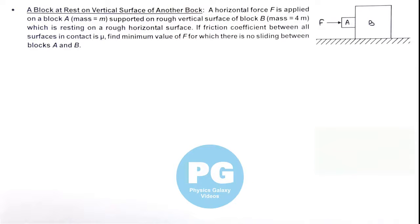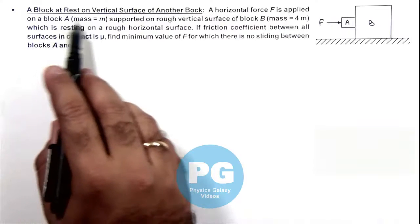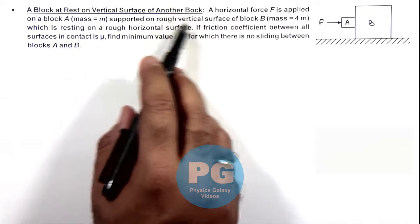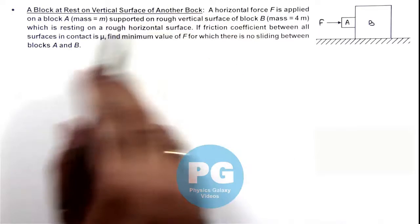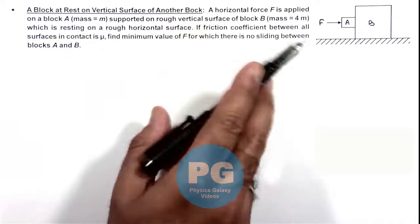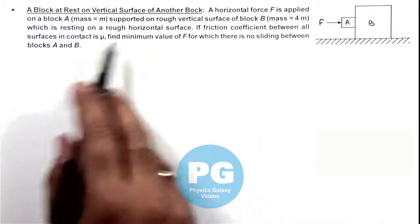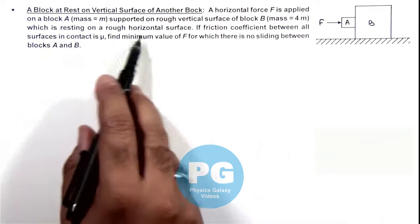In this illustration we'll discuss a block at rest on vertical surface of another block. Here we are given that a horizontal force F is applied on block A supported on rough vertical surface of block B, and it is resting on a rough horizontal surface.